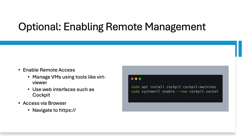Enable remote access to manage VMs using a tool like VRT viewer or web interfaces like Cockpit. Access via a browser at HTTP with your server IP address, followed by the port, which is by default 9090.